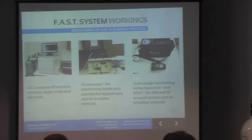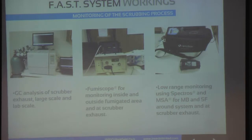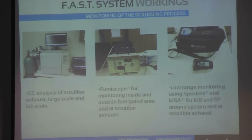This is how we monitor the scrubbing process and GC analysis. We will also use the fumiscope for monitoring inside and outside the fumigated area and also the scrubber exhaust. We'll also use low range monitoring using the Spectros and MSA — MSA for methyl bromide and the Spectros for SF — around the same places just mentioned.